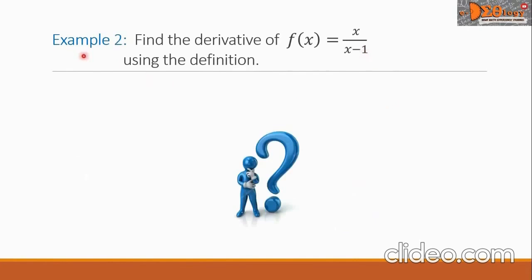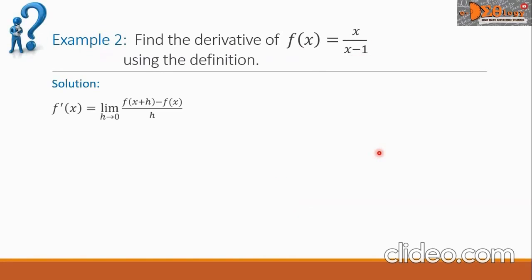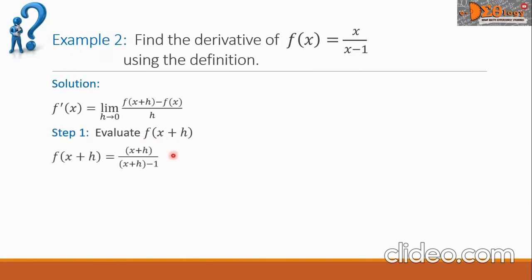Let us see example 2: find the derivative of f of x equals x over x minus 1 using the definition. For step one, we evaluate f of x plus h, which equals x plus h, all over the quantity x plus h minus 1. We can simplify this fraction by removing the grouping symbol to get our new fraction.